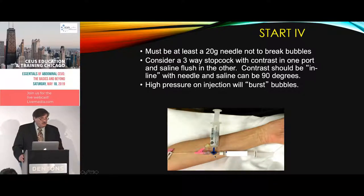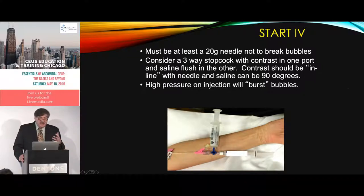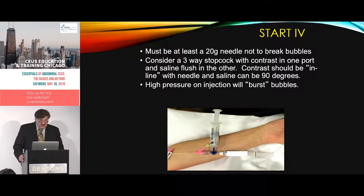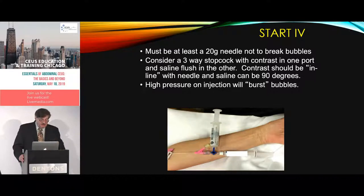When using the three-way stopcock, put the contrast agent parallel to avoid increased pressure around a bend, and the saline perpendicular. Use the valve to control which agents you're injecting. High pressure will always bust the bubbles — make sure any clamp is open before injecting; if it's closed, forcing the bubbles in will increase pressure and destroy them. Use at least a 20-gauge IV needle so there's no excessive pressure from a smaller needle. For pediatrics you can use a smaller needle, but inject more slowly. You should never feel pressure when injecting.